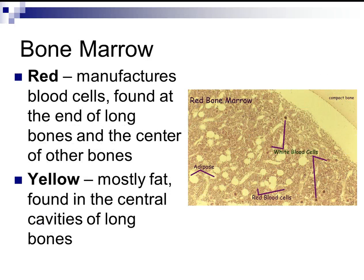Next, bone marrow. There is red bone marrow and yellow bone marrow. Red bone marrow manufactures blood cells and is found at the ends of long bones and the center of other bones — that is, in spongy bone tissue. Yellow bone marrow, which is mostly fat, is found in the central cavities of long bones, or in compact bone tissue.